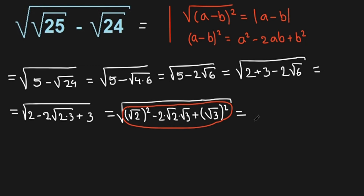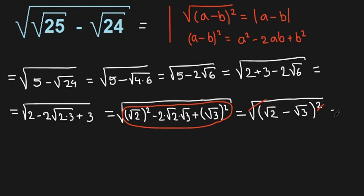So we have the square root of the bracket: (square root of 2 minus square root of 3) squared. This equals the absolute value of (square root of 2 minus square root of 3).